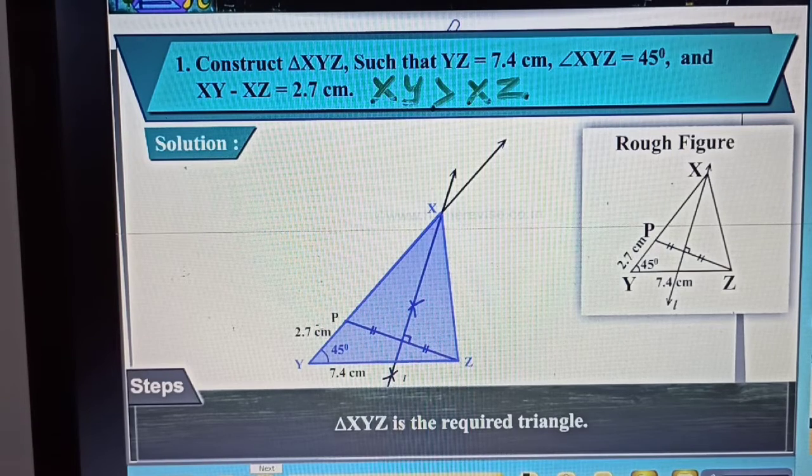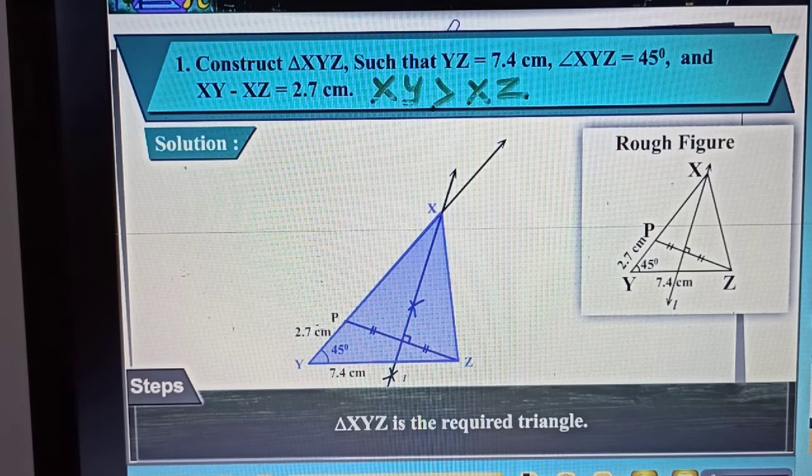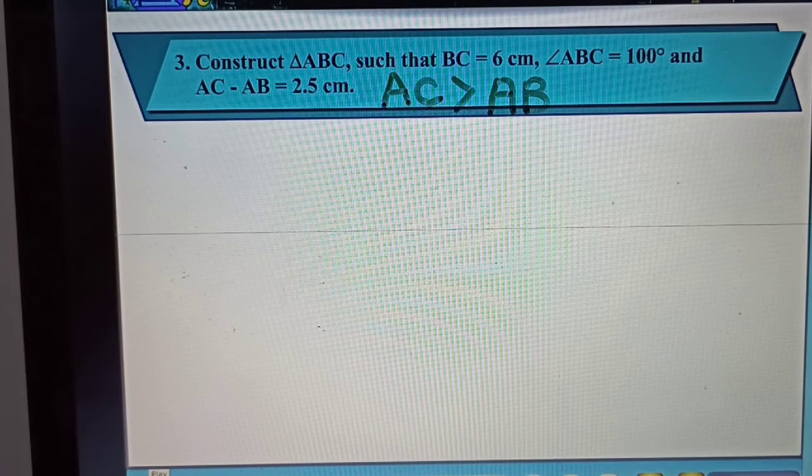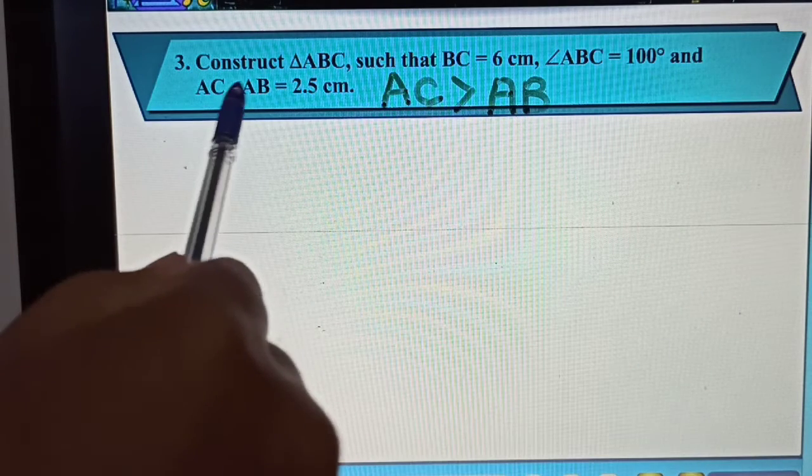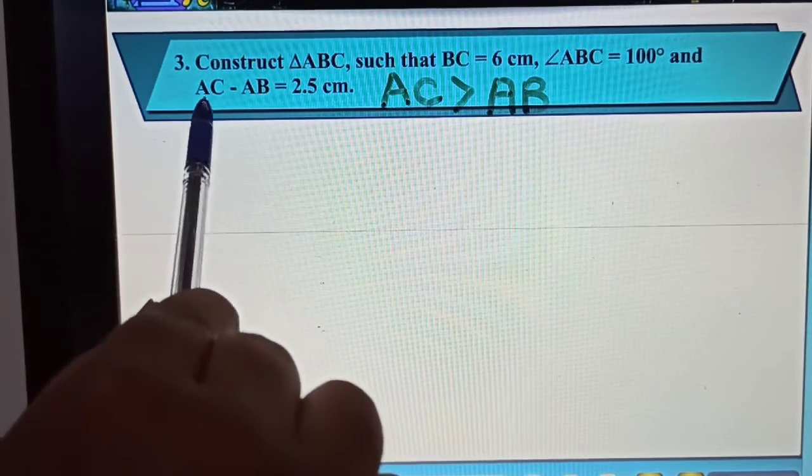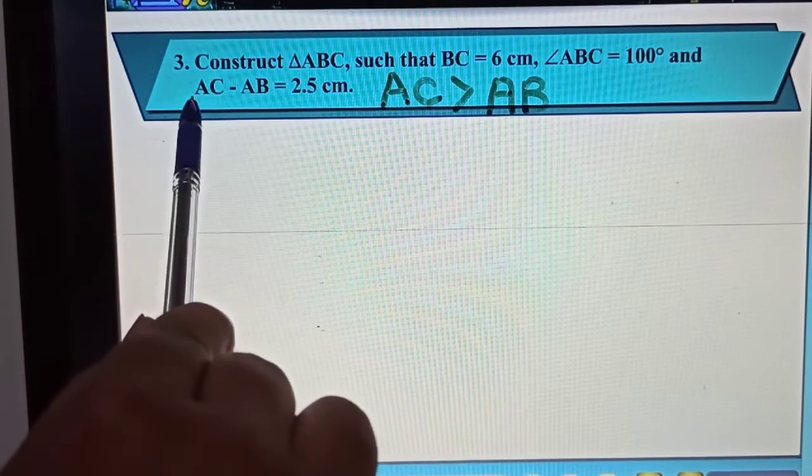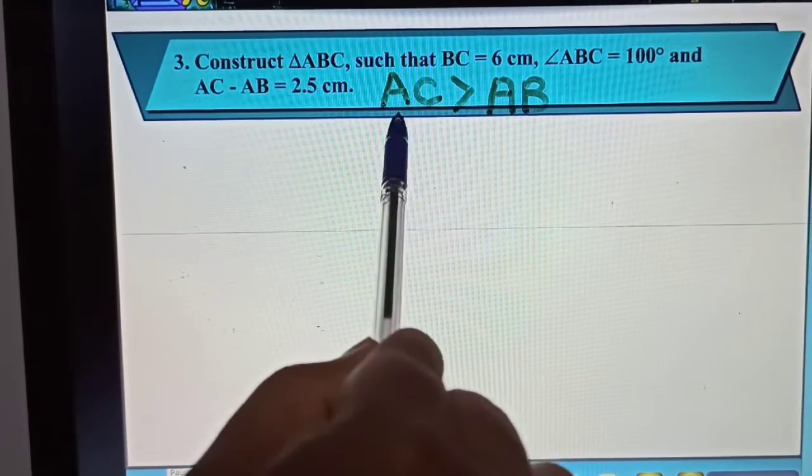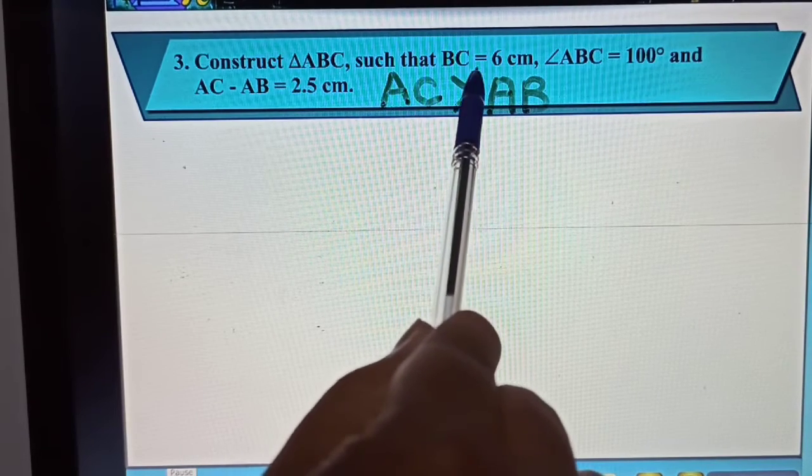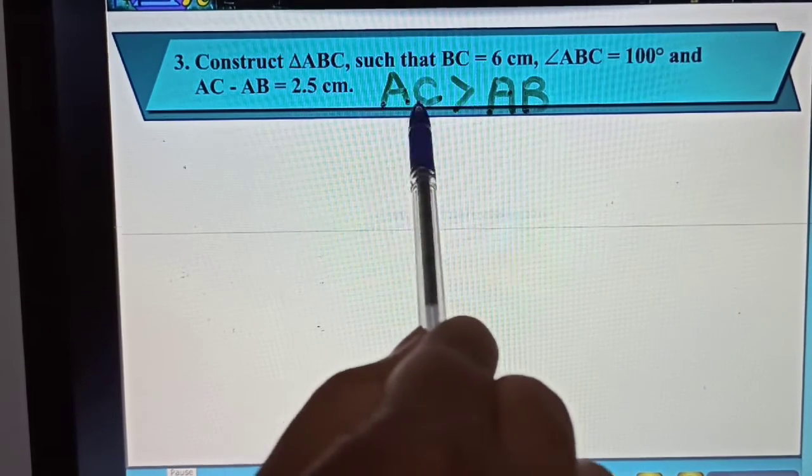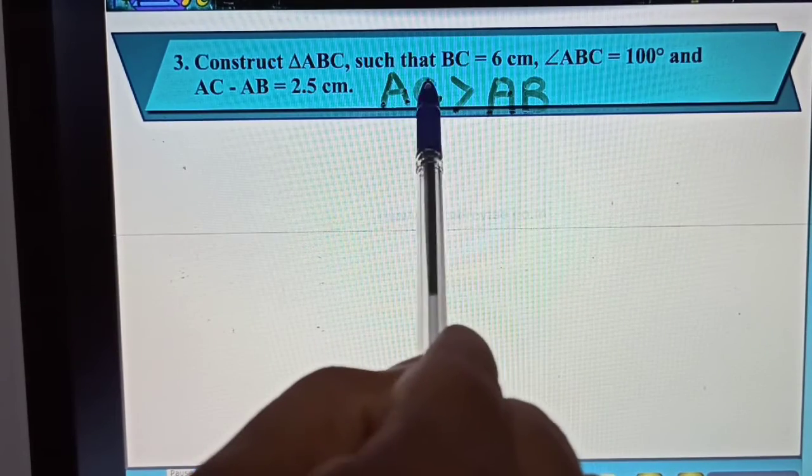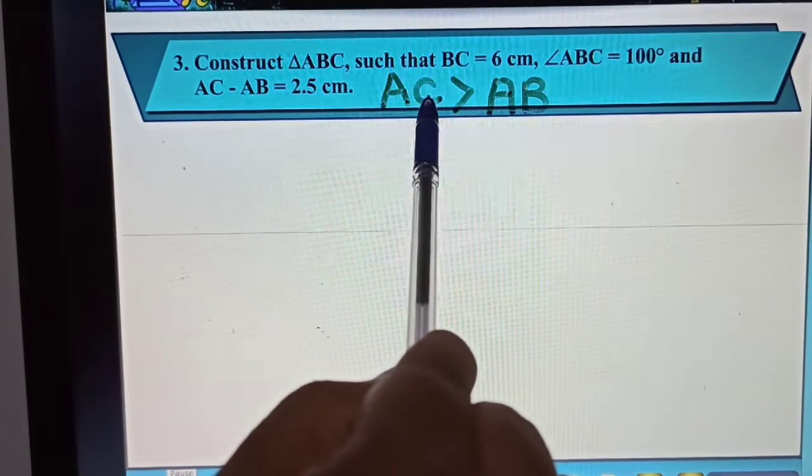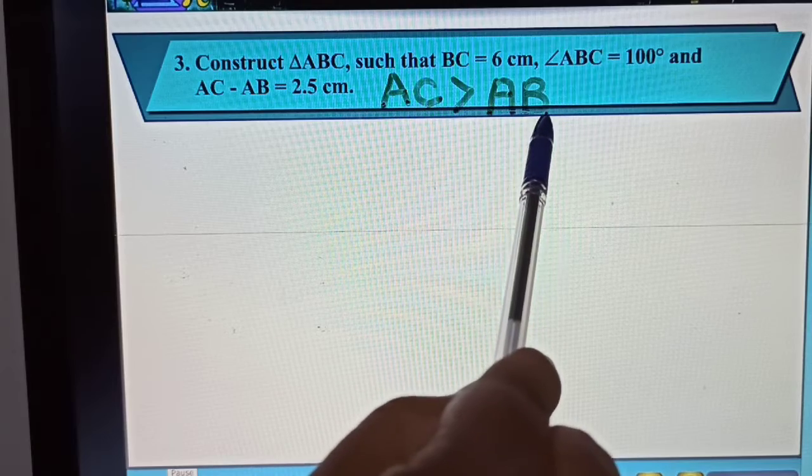Let me directly go to the third sum. Consider triangle ABC. The base is given to you, the angle is given to you, and this kind of subtraction is given: AC minus AB equals 2.5 cm. One thing is very clear from this: since AC minus AB, this must be greater and this must be smaller. So AC is greater than AB, which means the third point A will be away from C and close to B.